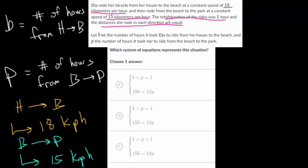Now, this next line here, the total duration of the rides was one hour. So we can say the total time equals one hour. And both the distances she rode are equal to each other. So it's the same distance from the house to the beach and from the beach to the park.